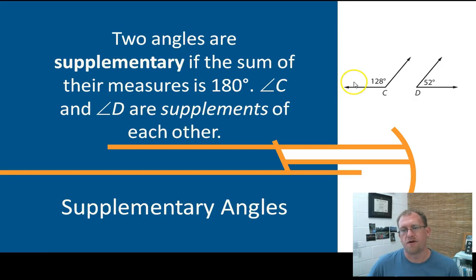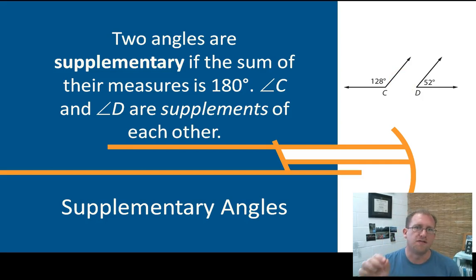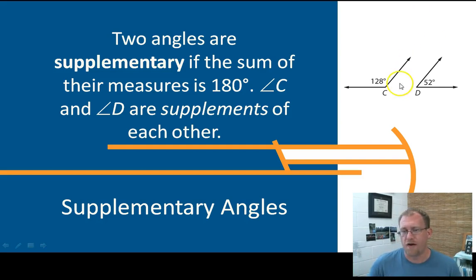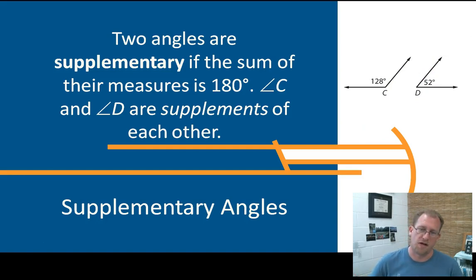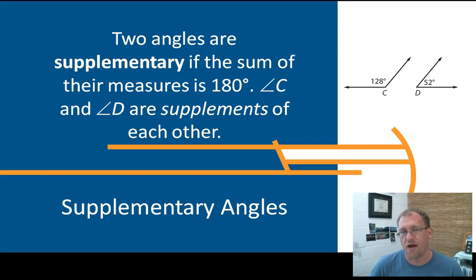Supplementary angles are angles where their sum is 180 degrees. Now this is the same idea as a linear pair, but the difference is that two angles can be supplements and not be adjacent. So if I were to stick this angle right up next to this angle, then they would be a linear pair. But even though they're not touching, they are still supplements. Linear pairs are adjacent supplementary angles, and angles that are supplements but not linear pairs still have measures that add up to 180, but they're not necessarily touching or sharing a ray.